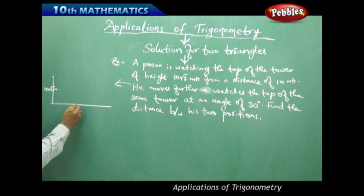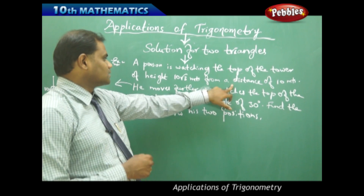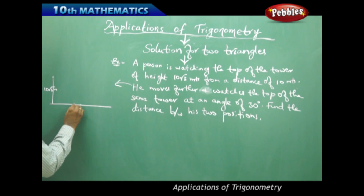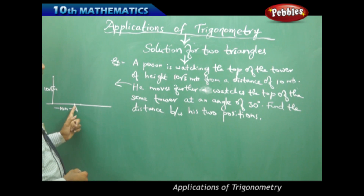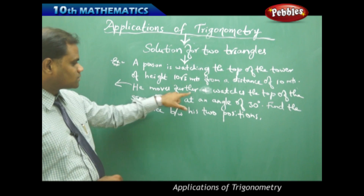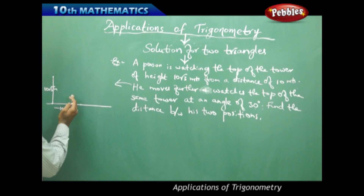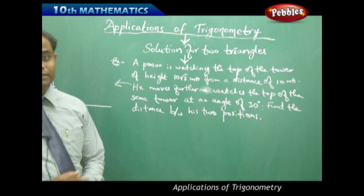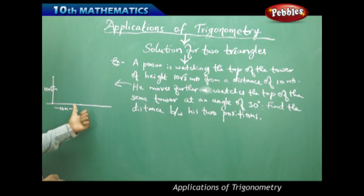The height of the tower is 10 root 3 meters. The person is initially standing at point A, 10 meters away from the foot of the tower — this is the foot of the tower and this is the top. So 10 meters away is point A. It is also given that he moves further and watches the top of the same tower at an angle of 30 degrees. Now, we should identify whether the person is moving towards or away from the foot of the tower.